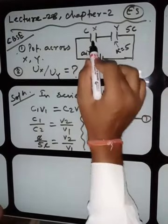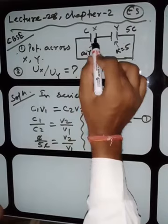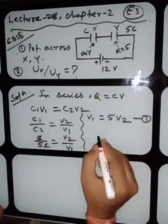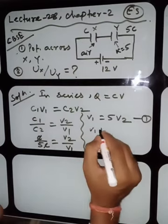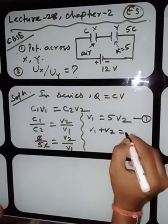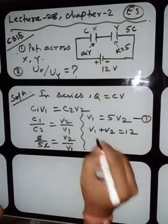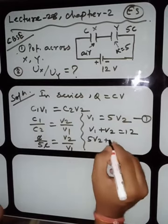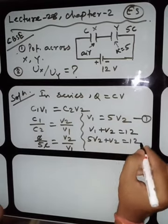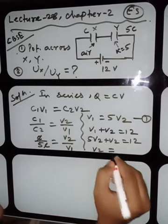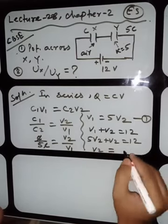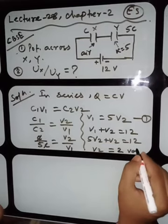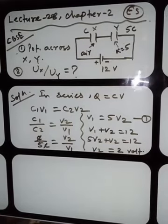The total potential is given as 12V, so V1 + V2 = 12V. Substituting V1 = 5V2: 5V2 + V2 = 12V, which gives 6V2 = 12V, so V2 = 2V. Are you getting the idea, students?